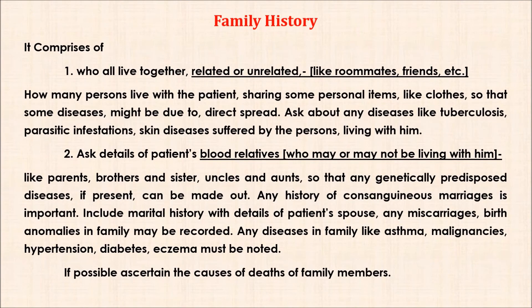Family history comprises: who all live together — related or unrelated like roommates and friends — how many persons live with the patient, sharing personal items like clothes, so that some diseases might be due to direct spread. Ask about any diseases like tuberculosis, parasitic infestations, and skin diseases suffered by persons living with him. Also ask details of the patient's blood relatives — parents, brothers, sisters, uncles and aunts — so that any genetically predisposed diseases can be identified. Any history of consanguineous marriages is important. Include marital history with details of the patient's spouse. Any miscarriages or birth anomalies in the family may be recorded. Diseases in the family like asthma, malignancies, hypertension, diabetes, eczema must be noted. If possible, ascertain the causes of deaths of family members.